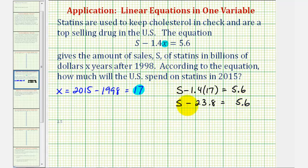To solve for S, we undo the subtraction by adding 23.8 to both sides of the equation.